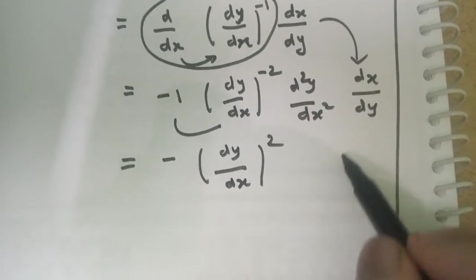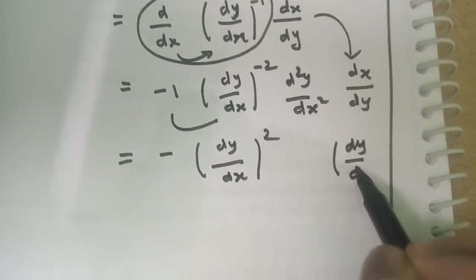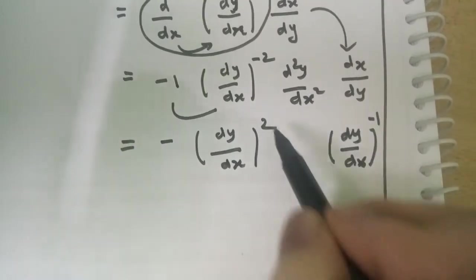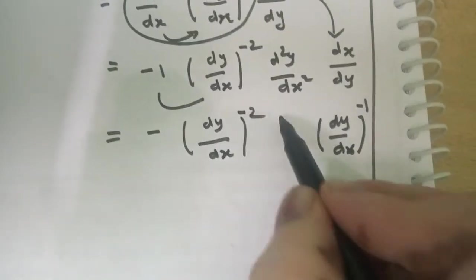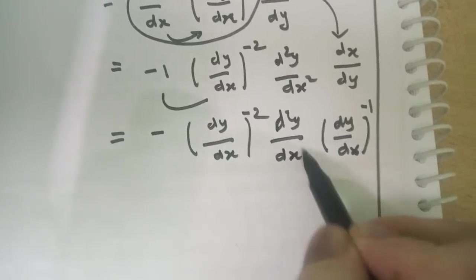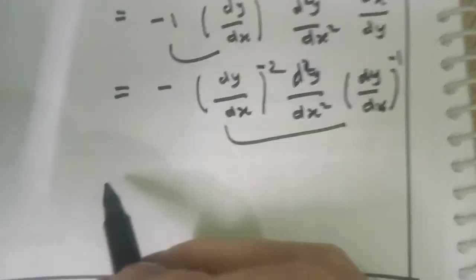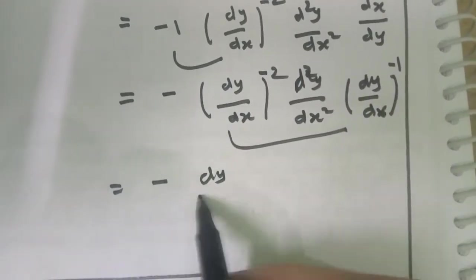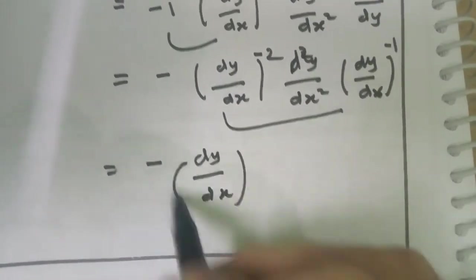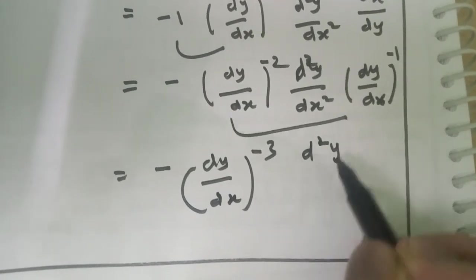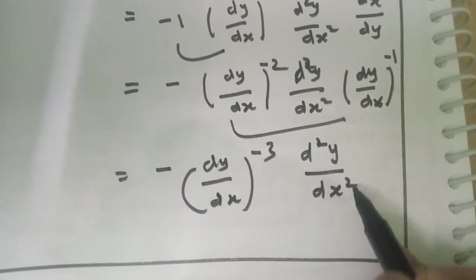This we write, (dy/dx)^(-1), here also -2, d²y/dx². Multiply (dy/dx)^(-3) d²y/dx².